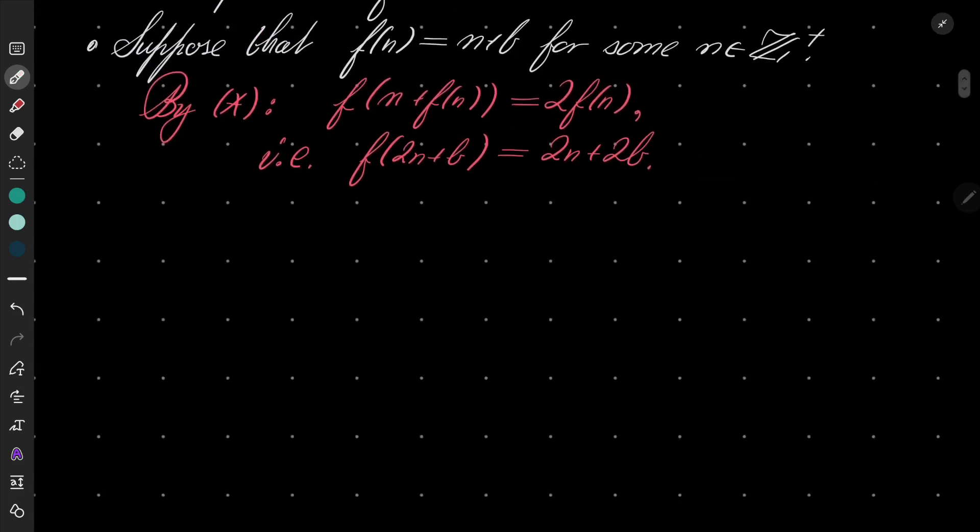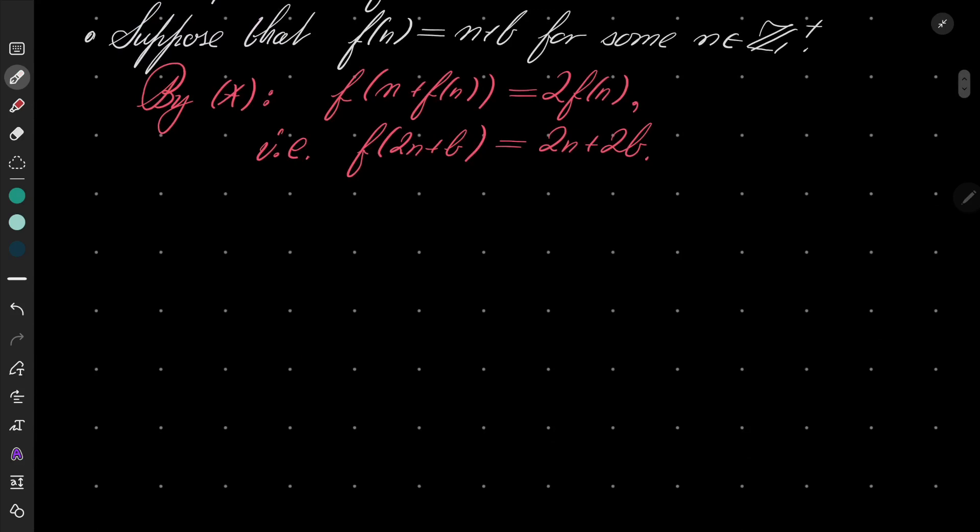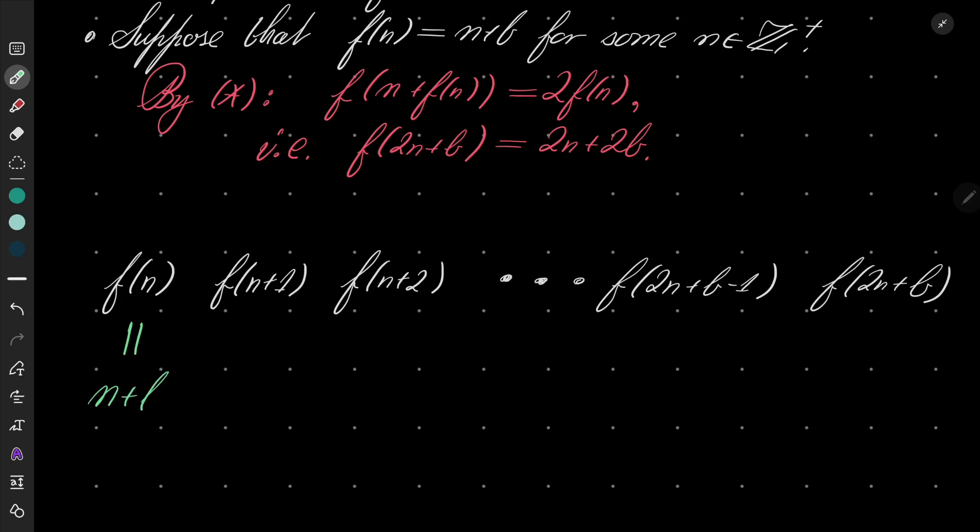And now, what I want to do is consider numbers f(n), f(n+1), f(n+2), and so on up to f(2n+b-1), and finally f(2n+b). Let's see. We know that the first number, by our assumption, is just n + b. And we also notice that the last number is 2n + 2b.